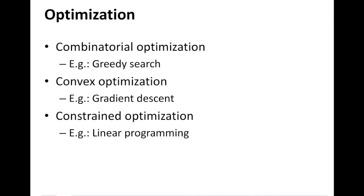The third bucket is optimization — combinatorial optimization, convex optimization, and constrained optimization. This concerns how we solve an optimization problem and how to optimize the algorithm for the data in question. There are a number of optimization techniques we will look at, and we will study them side by side with the machine learning models discussed under representation.